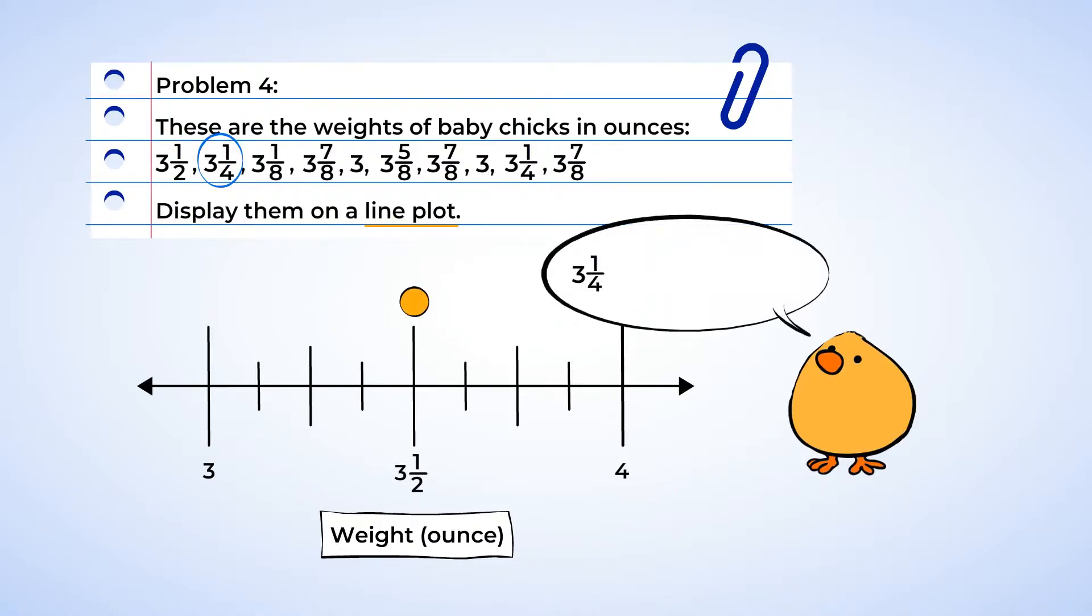Well, to change the fourth to be an eighth, we'll need to multiply the numerator and the denominator by two. So three and one fourth is the same as three and two eighths. Now, we can plot this point on the third tick mark. Next is three and one eighth that goes here on the first tick mark. Three and seven eighths will go here on the third tick mark after the half. And three wholes is plotted here over the last three.